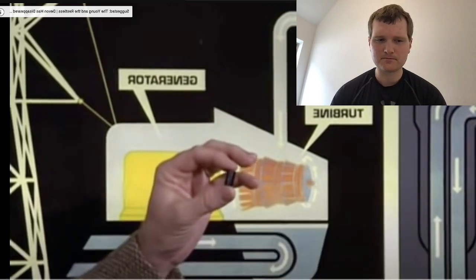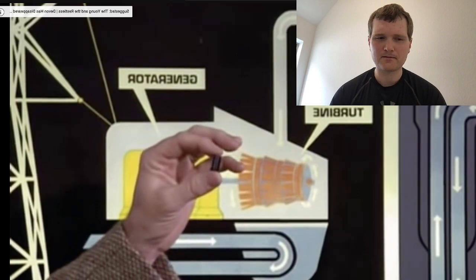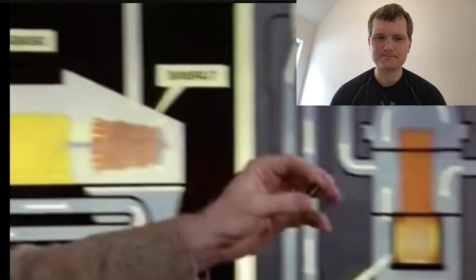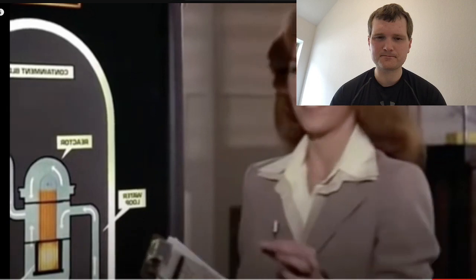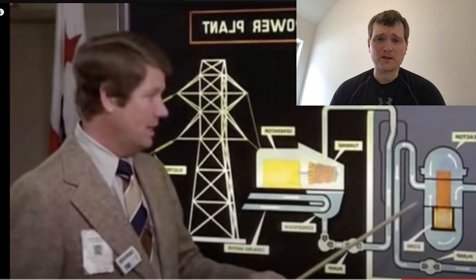In uranium, the exact size that's used in the fuel rods, this tiny pellet contains more energy than six carloads of coal. We have 20 million of those pellets inside the reactor vessel. That's right.